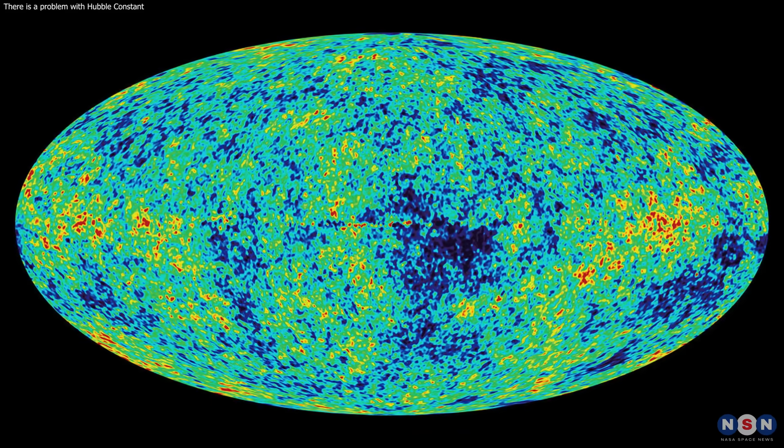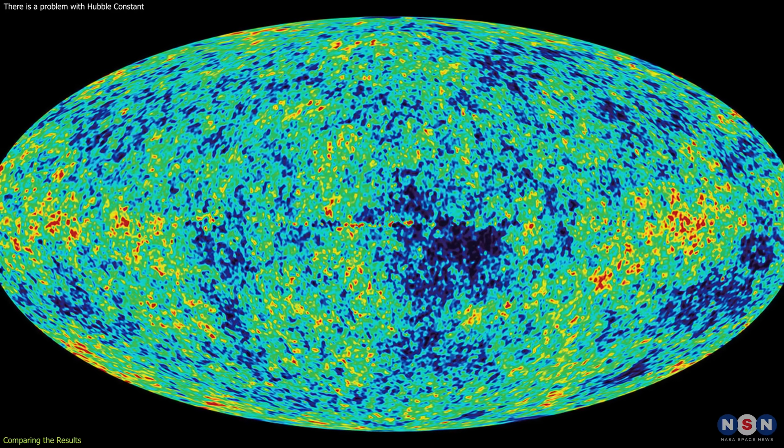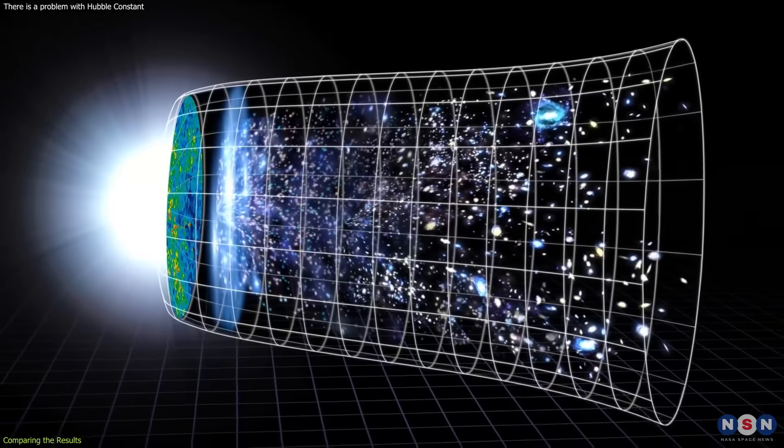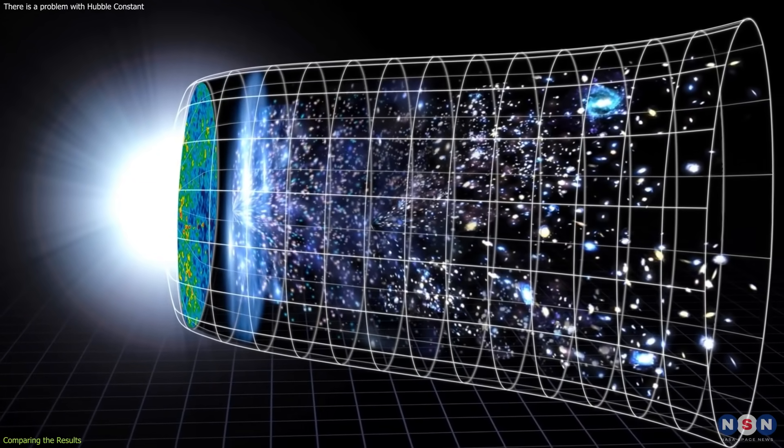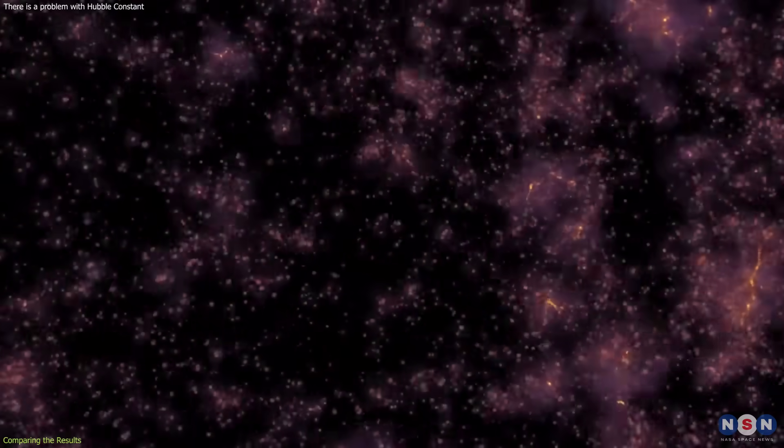The cosmic microwave background, or CMB, is the oldest light in the universe, which was emitted about 380,000 years after the Big Bang, when the universe became transparent for the first time.